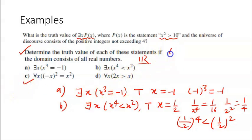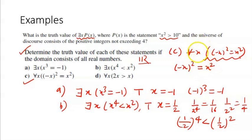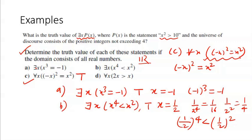Now consider: for all x, -x² = x². From our algebra, we know that -x² is certainly equal to x² — this is true for every value of x. We cannot find any x for which this statement is false. That is why this is also a true statement — for every value of x, -x² equals x².